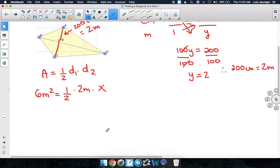Let's simplify this equation. We're going to get 6 square meters is equal to half of 2 meters, which is just 1 meter, times X.